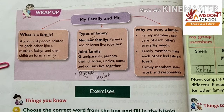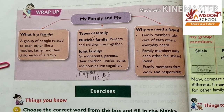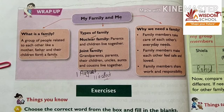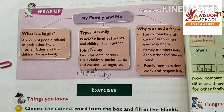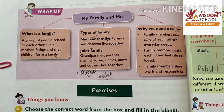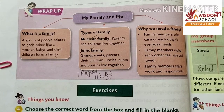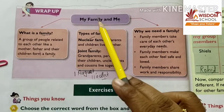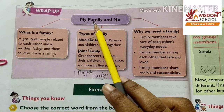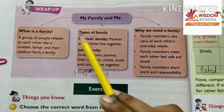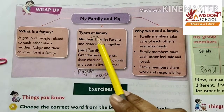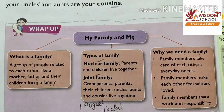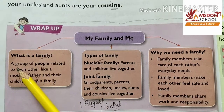Good morning students, welcome to your EVS class. From today onwards we are going to revise your periodic test syllabus. Open chapter number four: My Family and Me. We are going to revise what is a family, types of family, and why we need a family.